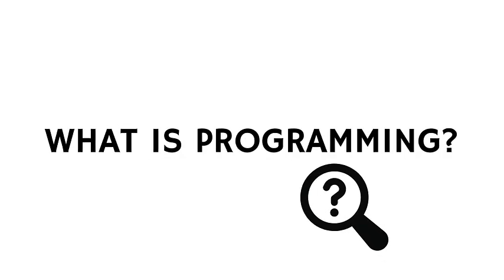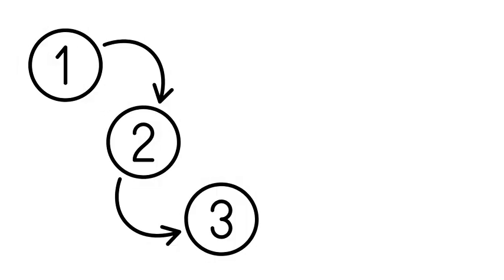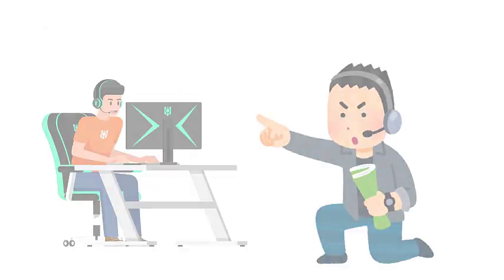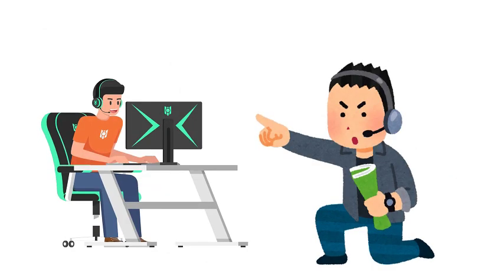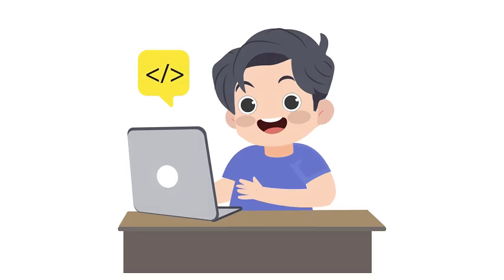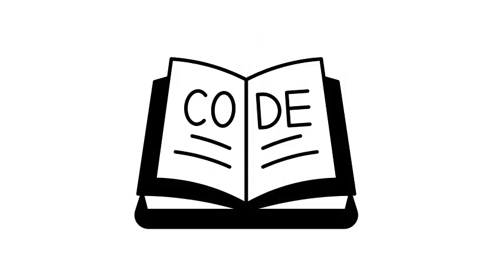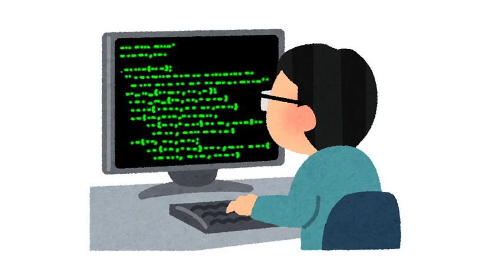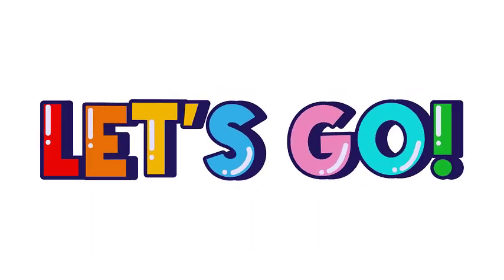What is programming? Programming is like giving instructions to a computer. Just like when you tell your friend how to play a game, you can tell a computer what to do by using special instructions. These instructions are called code. Ready to learn some cool things you can do with code? Let's go!